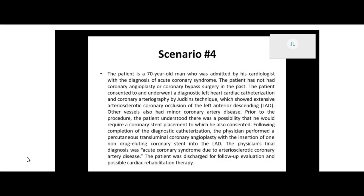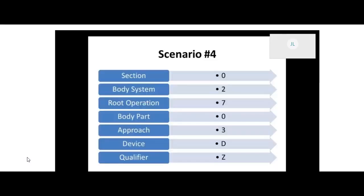For the seventh character — the qualifier column — we can pick 6 for bifurcation or Z for no qualifier. Going back to the op report, there is no documentation of bifurcation, so we're going to pick Z for no qualifier. So our final code for this procedure is 02703DZ.